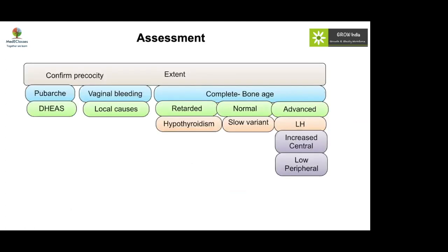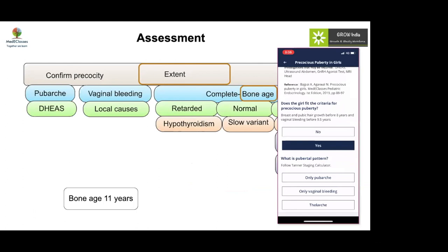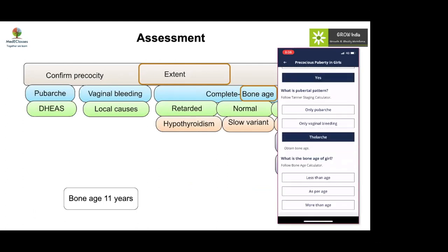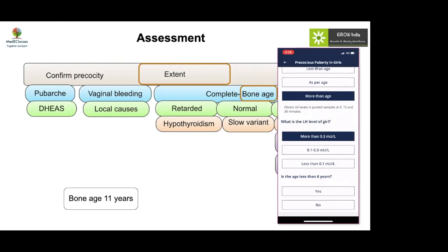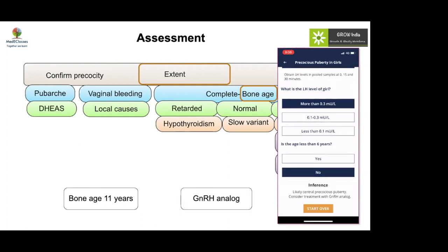Since bone age is advanced, the next step is to differentiate central from peripheral precocious puberty using basal LH. If basal LH is not clearly elevated, a stimulation test should be performed. A high stimulated LH points to central precocious puberty, requiring GnRH analogue therapy. A suppressed LH points to peripheral precocious puberty, such as congenital adrenal hyperplasia. In this case, LH was high, confirming central precocious puberty.